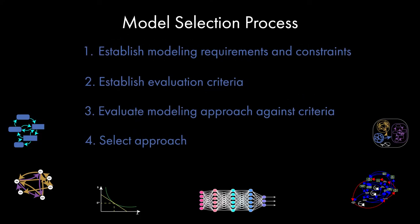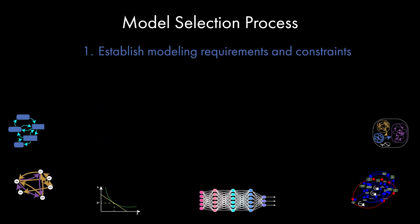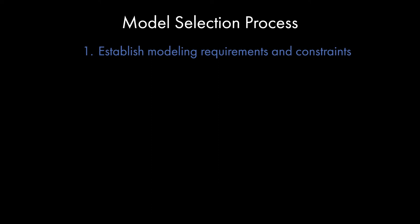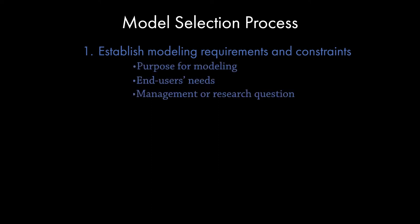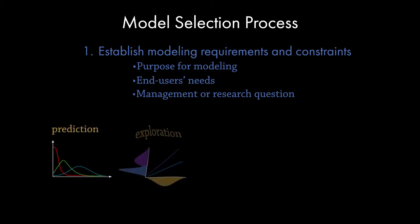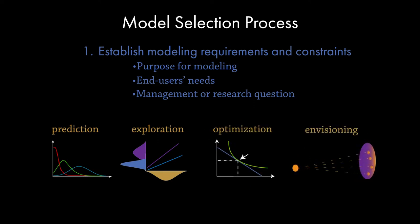There are four main steps in the model selection that take you from a focus on the problem at hand all the way to evaluating the model. The first step is about establishing the modelling requirements and constraints. This includes the perceived modelling purpose, end user needs and the management or research question. Broad goals could include prediction, exploration, optimisation and envisioning. However, the model purpose may not be clear at the beginning, so the purpose needs to be revisited and iteratively defined throughout the selection process.